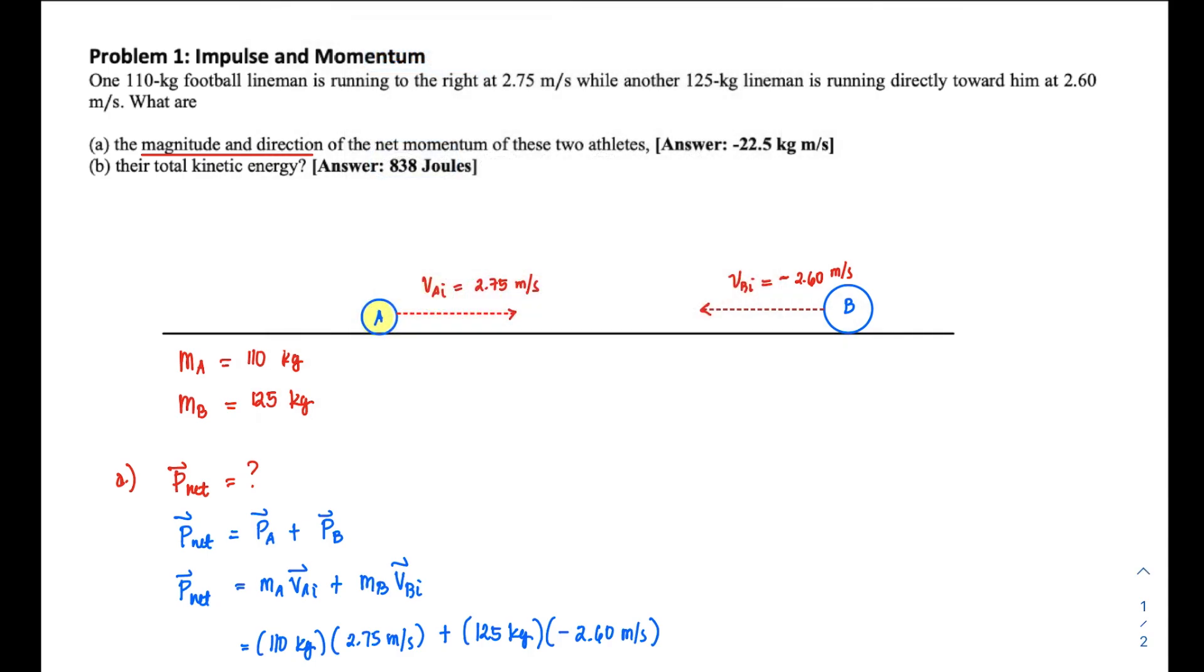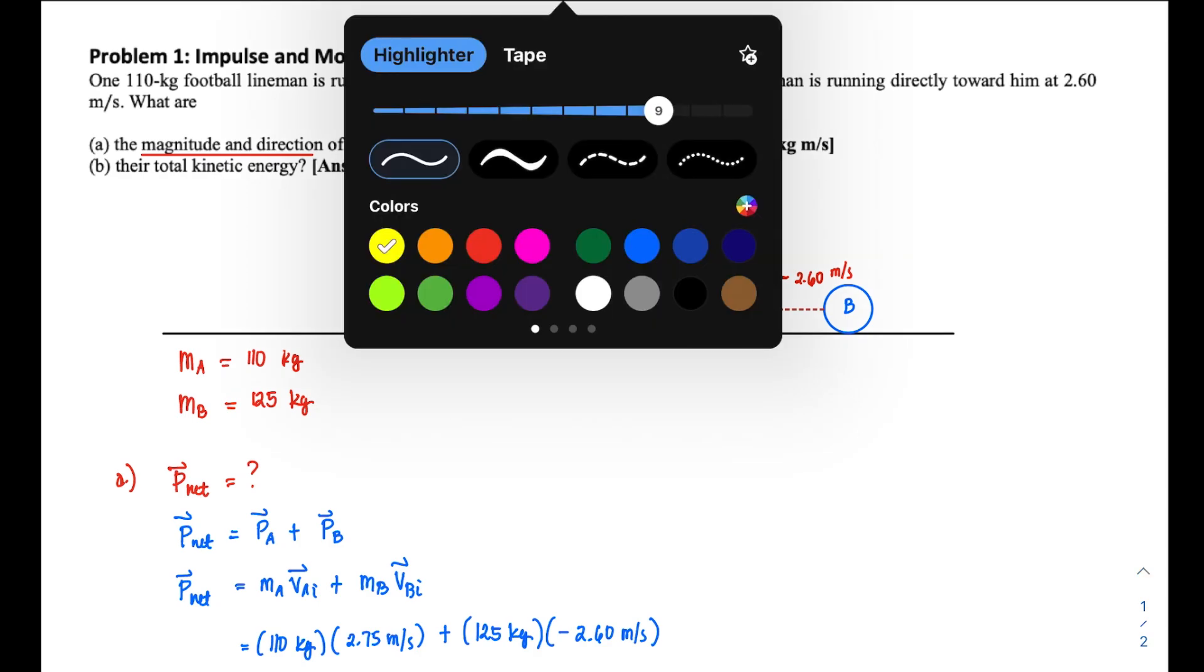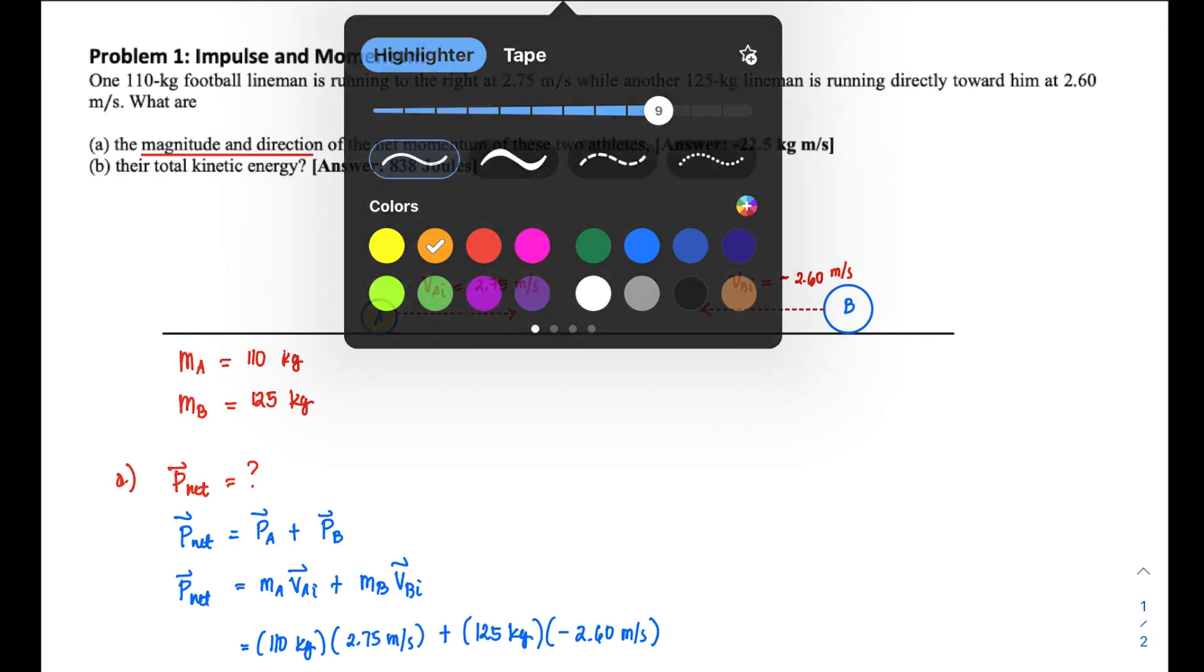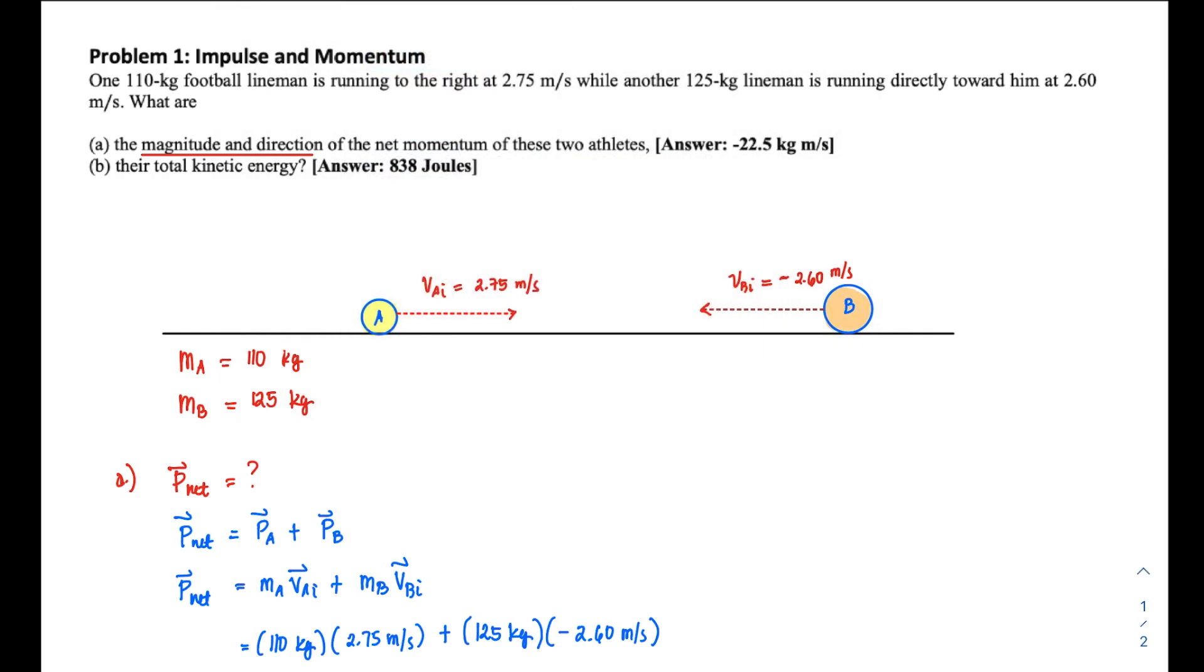note that mass A is moving at 2.75 m/s but has a smaller mass of 110 kg. The other one, B, is 125 kg, so it's more massive and is moving at a relatively